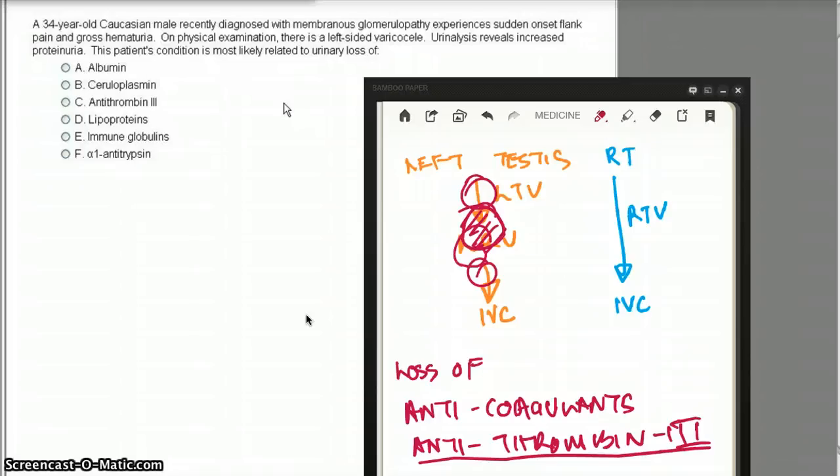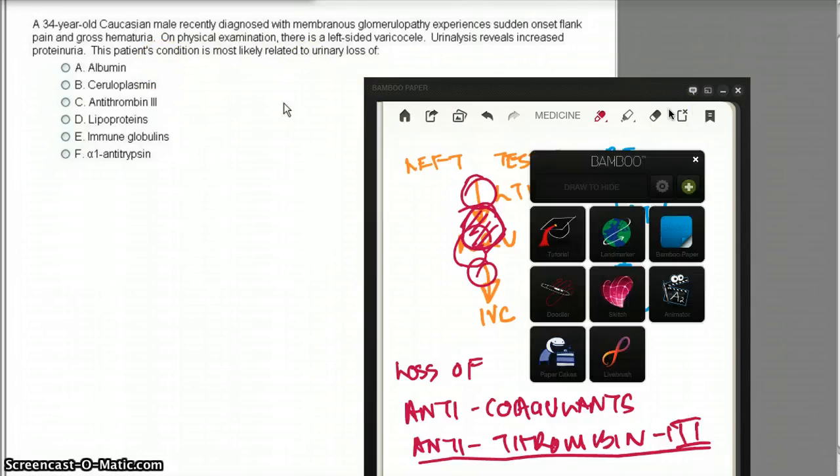But this is just one of the common complications, and this is related to renal. A 34-year-old Caucasian male recently diagnosed with MGN experiences sudden onset of flank pain and gross hematuria. On physical exam, there is left-sided varicocele.